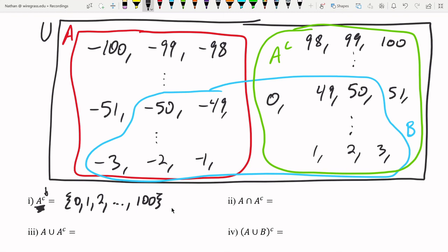A intersect A complement is saying, what's the overlap between these two? Of course, you can see there's a direct divide right here. These are what's called disjoint sets. There's no overlap.